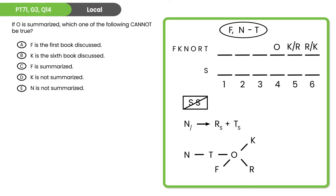Here's the next question. Welcome back. If O is summarized, we know O is in the fourth week, so we put S in the bottom row for week four. Since no two summarized books can be consecutive, weeks three and five are not going to be summarized. There's not a lot else to figure out here, so we go to answer choice A and test whether it could be true — since the question asks what cannot be true.